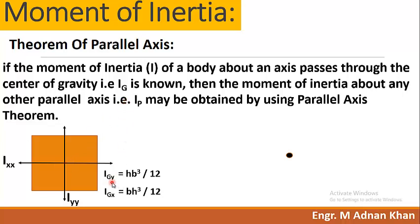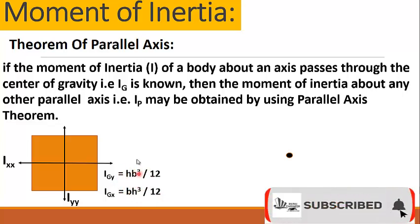If IG is known to us — that is IGY, the moment of inertia about the centroidal axis along the Y-axis — it will be equal to HB³ divided by 12. And IGX, the moment of inertia when the reference axis passes through the centroid along the X-axis, will be equal to BH³ divided by 12. Note the minor difference: for Y it is HB³ and for X it is BH³, both divided by 12.